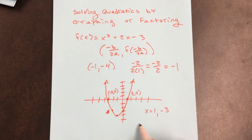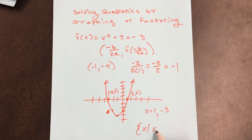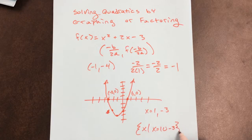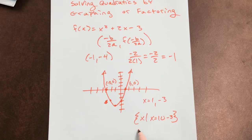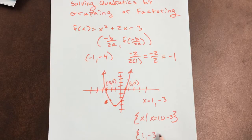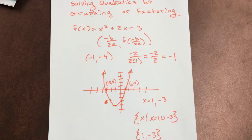If I wanted to write it as a set, I would say x belongs to the set where x equals 1 or negative 3. Roster notation is probably better — roster notation says {1, negative 3}. That's everything in the set.